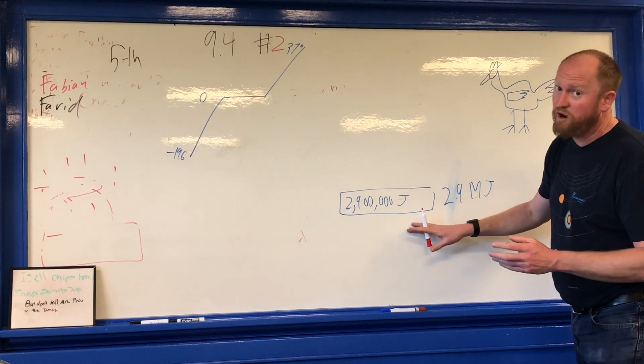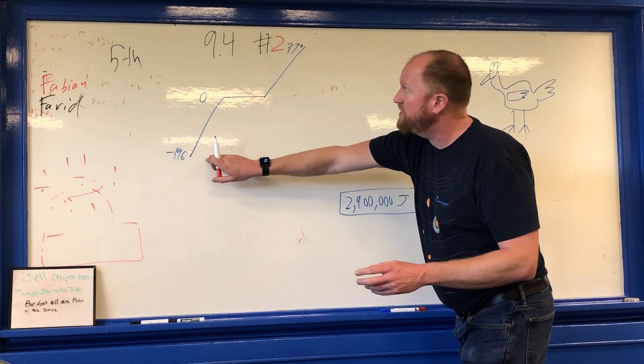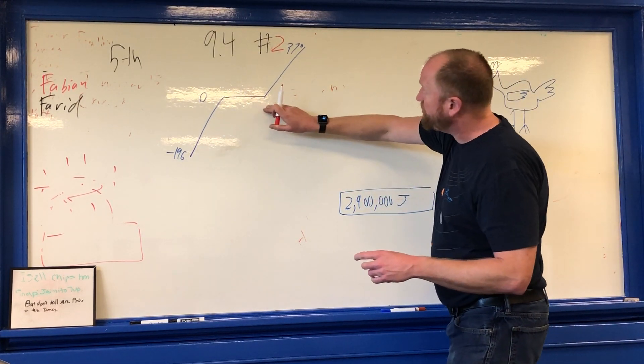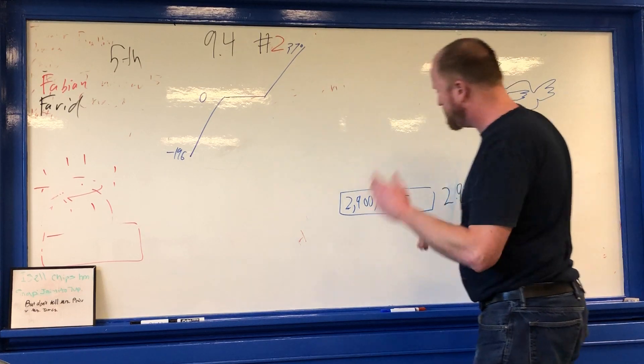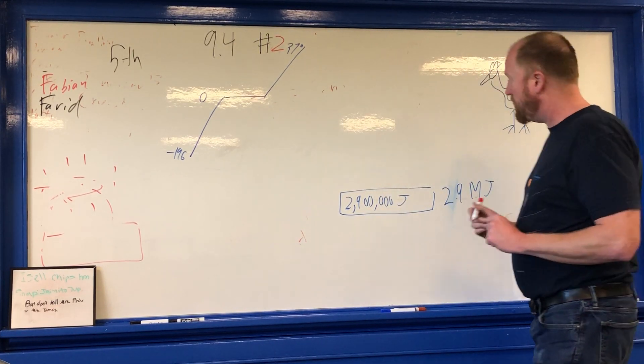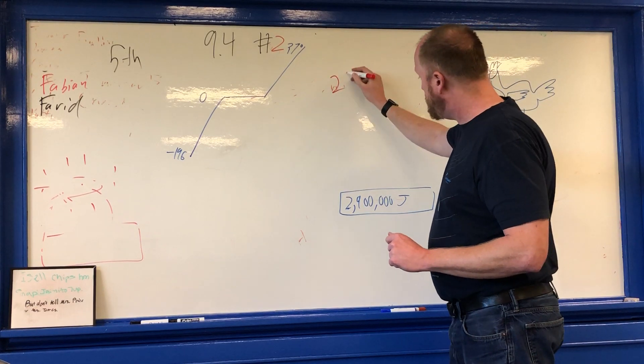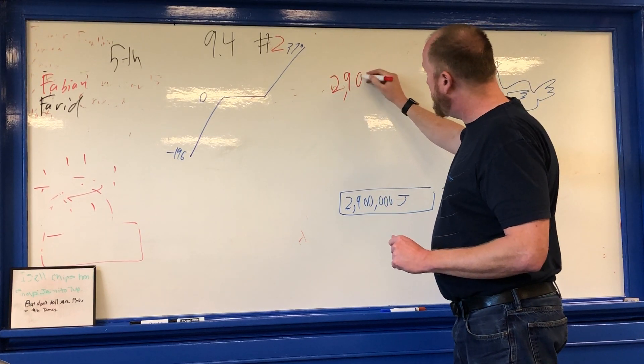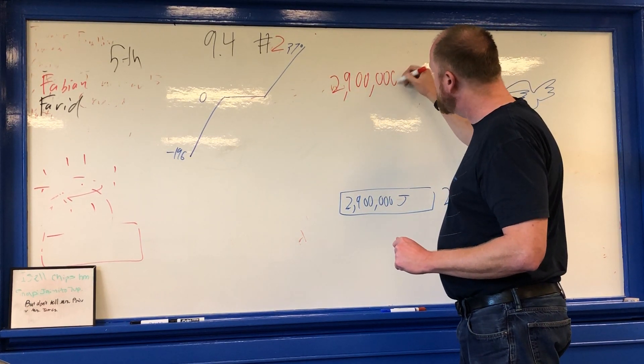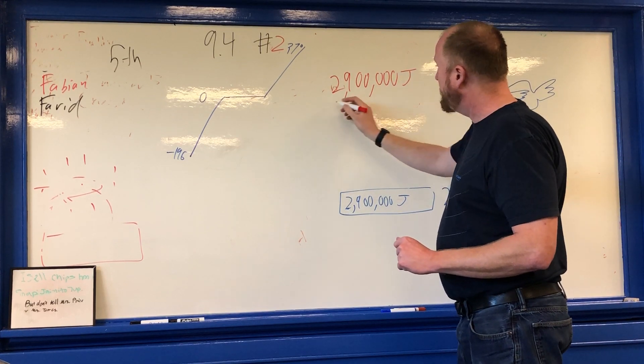Anyway, so you know how much energy is required to go from negative 196 through thawing all the way up to body temperature. But you need to do it in five minutes or less. So, you have, in this case, 2.9 million joules you need to go through. And you got five minutes.